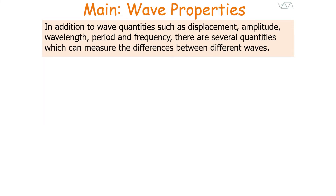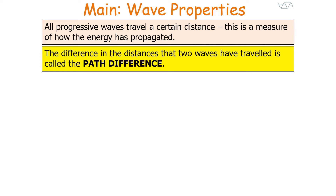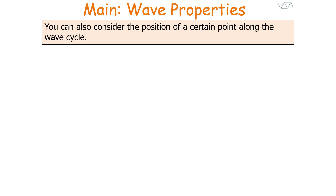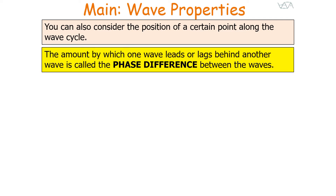In addition to wave quantities we've looked at previously — such as displacement, amplitude, wavelength, period, and frequency — there are several quantities which describe differences between waves. All progressive waves travel a certain distance, measuring how energy is propagated. The difference in distances that two waves have travelled is called the path difference, measured in units of wavelength lambda. You can also consider the position of a certain point along a wave cycle, which we call the phase of the wave. The amount by which one wave leads or lags behind another is called the phase difference.